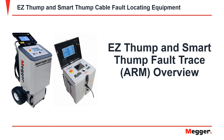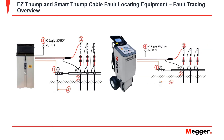In this video, we will be going over the fault trace or arm on the easy thump and the smart thump. For a brief connection overview: first, apply your equipment safety ground to ground. Then, apply your high voltage return lead to the concentric neutral or shield under test. Finally, place your high voltage output lead to the cable under test.